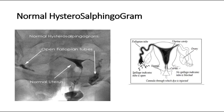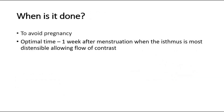This picture shows a normal hysterosalpingogram, where you can see the fallopian tubes and the normal uterus. Regarding timing, we have to avoid pregnancy when doing this imaging test and the optimal time is one week after menstruation, when the isthmus is most distensible to allow the flow of contrast media.